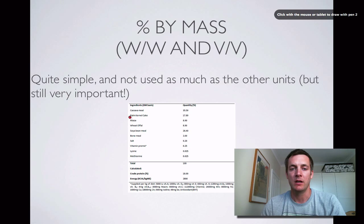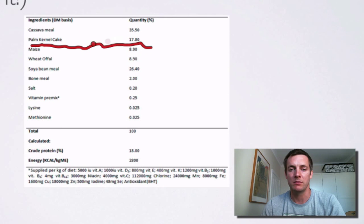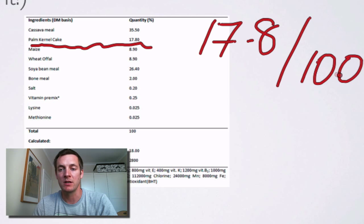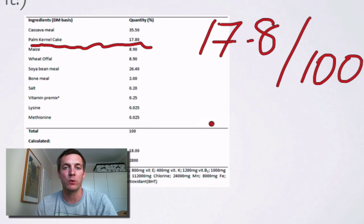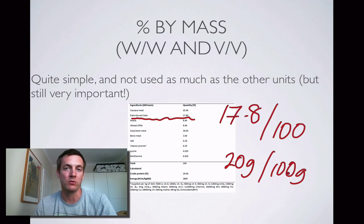In this mixture, palm kernel cake is 17.8 percent of it — in other words 17.8 grams out of every 100 grams is palm kernel cake. Equally, 20 percent sodium chloride by mass in an aqueous solution would mean 20 grams out of every 100 grams of solution would be sodium chloride.